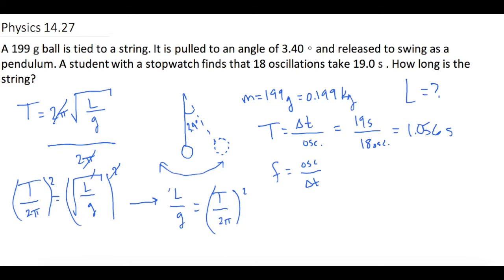Okay now we're going to multiply both sides of the equation by g. So the g cancels on the left. Multiply this side by g. So now we get L equals T divided by 2π squared times g.